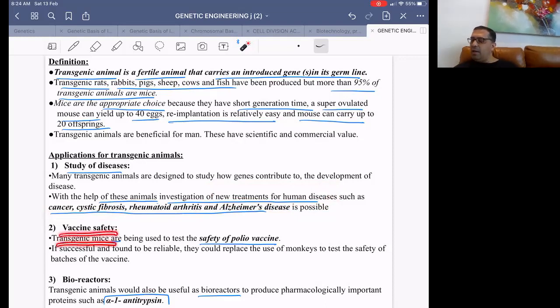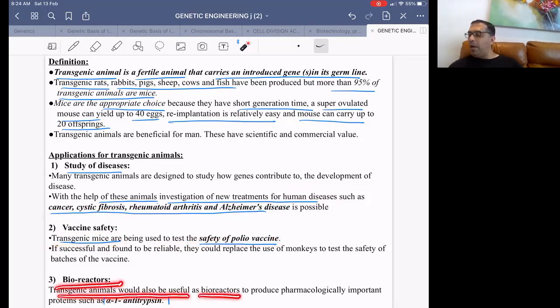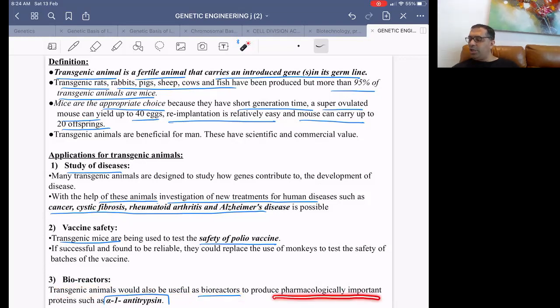Vaccine safety. Transgenic mice are used to test the safety of polio vaccine. Before giving vaccine to humans, check the side effects. That's the reason many people avoided having corona vaccine. So you detect the side effects first in animals. Transgenic mice are used to detect polio vaccine safety before giving oral polio drops to children.